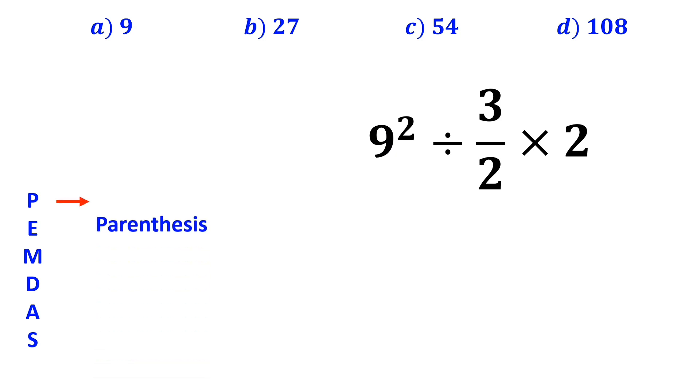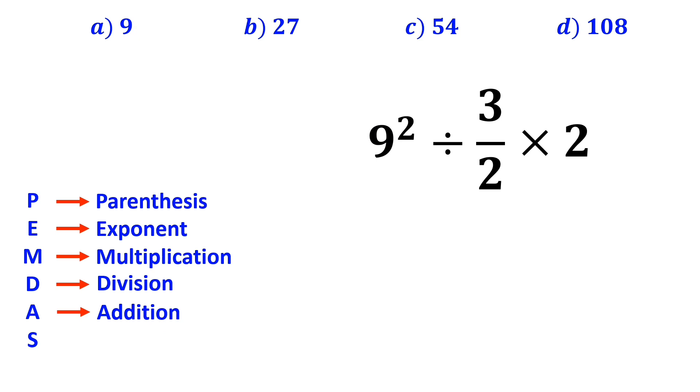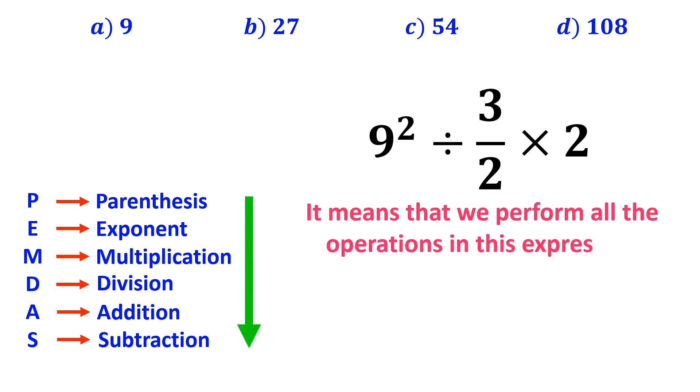In this rule, P stands for parenthesis, E stands for exponent, M stands for multiplication, D stands for division, A stands for addition, and S stands for subtraction. It means that we perform all the operations in this expression exactly according to the PEMDAS rule, in order from top to bottom.